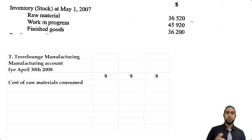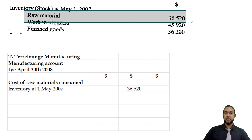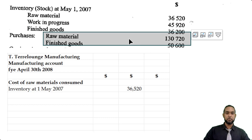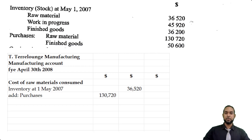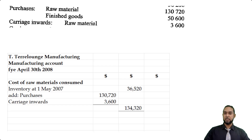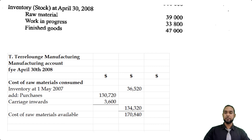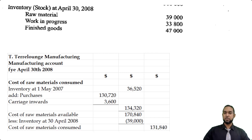The cost of raw materials consumed follows the cost of goods sold formula: opening stock plus purchases minus closing stock. The opening stock of raw materials was $36,520. Purchases of raw material were $130,720, and carriage inwards on raw material was $3,600, which we include as part of the cost. There were no returns outwards, so we total those and subtract the closing stock of raw materials of $39,000, giving us a cost of raw materials consumed of $131,840.